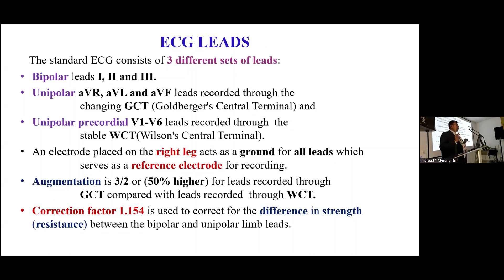Regarding ECG leads: bipolar limb leads are Lead 1, 2, and 3, and unipolar AVR, AVL, AVF are recorded through the changing Goldberger center terminal. Unipolar precordial V1 to V6 is recorded through the stable Wilson center terminal. The electrode placed on the right leg is a reference electrode, and leads recorded through the Goldberger center terminal are augmented by 3/2 or 50 percent higher.